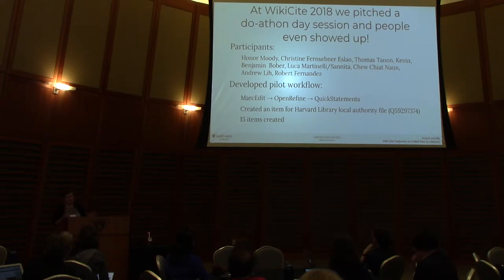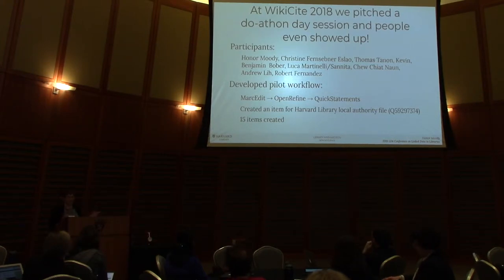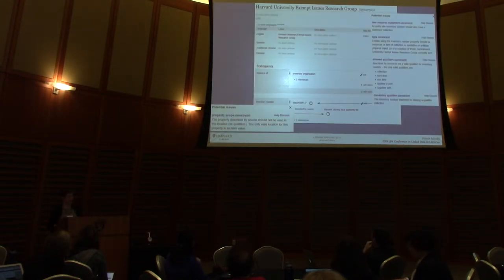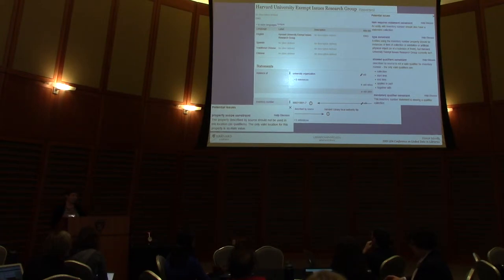We got MARC Edit into OpenRefine. We used QuickStatements — though I understand from a talk yesterday that that's actually not necessary in the latest versions of OpenRefine, so this is already kind of outdated. We did create an item for the Harvard Library local authority file, and we created 15 items in batch that really only had an instance-of 'university organization' statement and a reference to the identifier from the local authority file. This is one that we created: the Harvard University Exempt Issues Research Group. I think they did something about exempt staff, but looking at the bibliographic data did not tell me anything else. This is a good example because it shows what they looked like before — there are the property scope constraints and potential issues with the use of inventory number for our local authority file identifier.